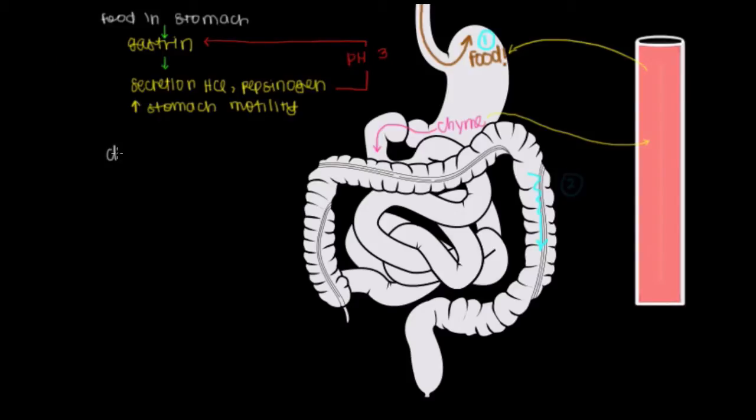So remember the next part of our digestive process involves delivering chyme to our small intestine. And we'll specify the first part of our small intestine. And remember that's called the duodenum. So chyme that's delivered to our duodenum. Now this is going to cause the release of two other hormones. The first hormone I'm going to talk about is called secretin.